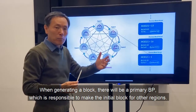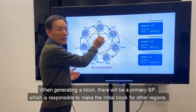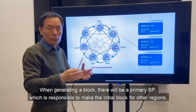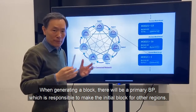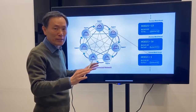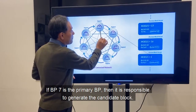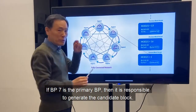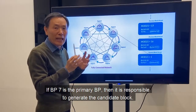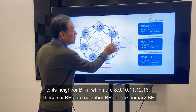When we make blocks, there will be primary BPs — those are the BPs responsible for making the initial first blocks. The candidate block is generated by the primary BP and then propagates through the regions. For example, if BP7 is the primary BP, it is responsible for generating the candidate block.